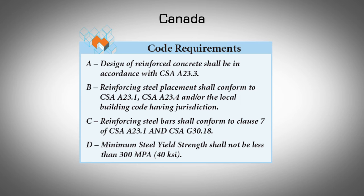CCMC report number 13043-R contains reinforcing steel tables for below-grade and up to two stories of above-grade applications in residential projects. The report also contains some lintel tables for wall openings, both in metric and imperial units. There are applicability limits mentioned in the report which must be adhered to; if the particular project falls outside of these limits, then a local licensed registered engineer should be retained.